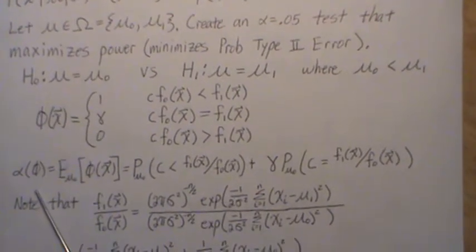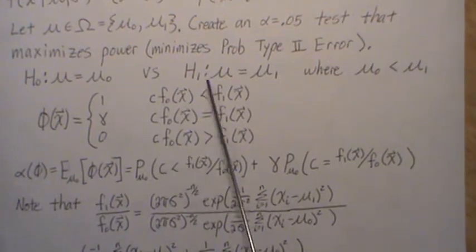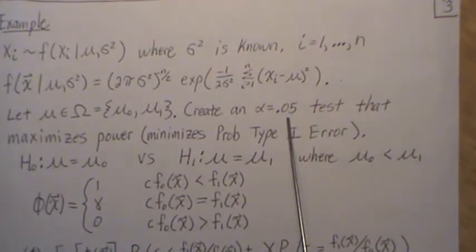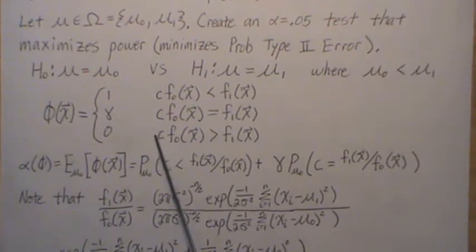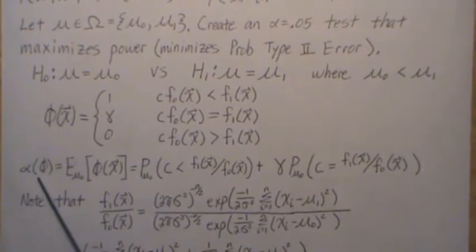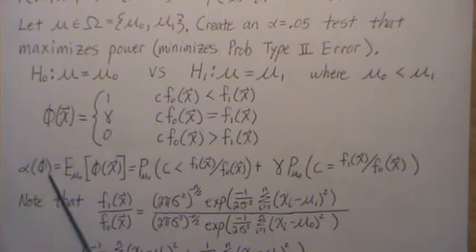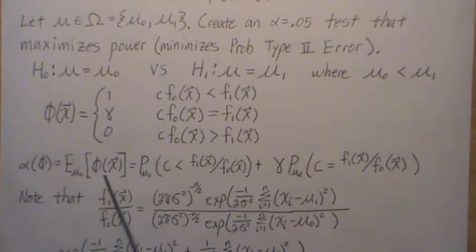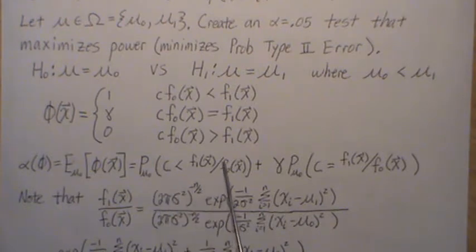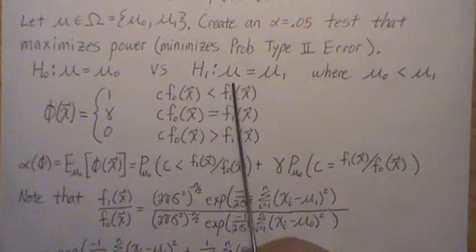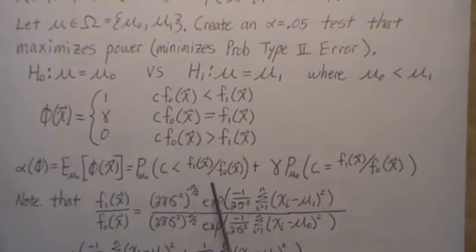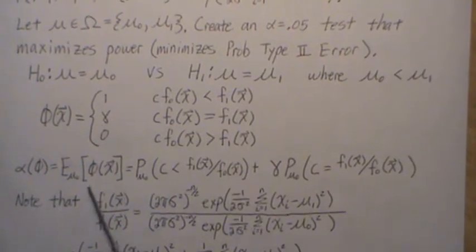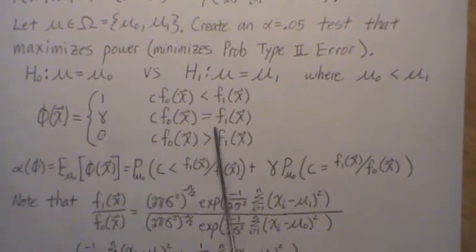Now let's find alpha. We want it to be a 0.05 test, so we need to find c and gamma, because those are currently unknown, to make this a 0.05 test. Alpha of phi is the expected value of phi under the null hypothesis, which equals the probability that the likelihood ratio is greater than c. So it's this probability — if we divide both sides by f of zero, we're in this setting, and since it's an expected value it's this times this probability.